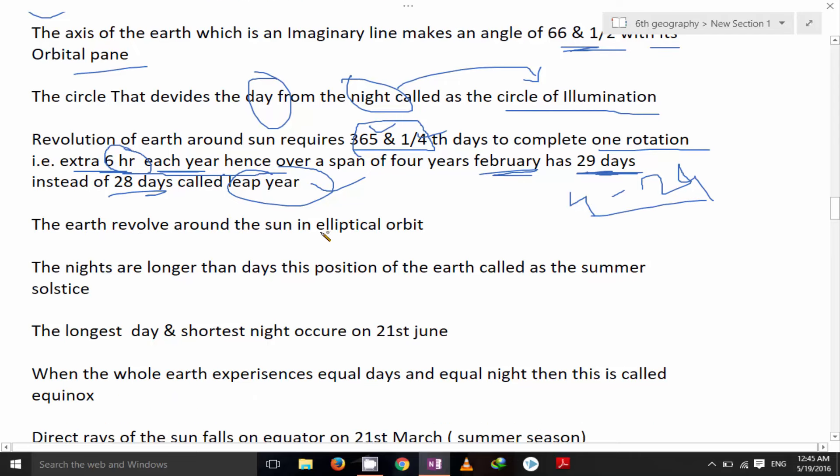The earth revolves around the sun in elliptical orbit. The nights are longer than days, this position of the earth called summer solstice.